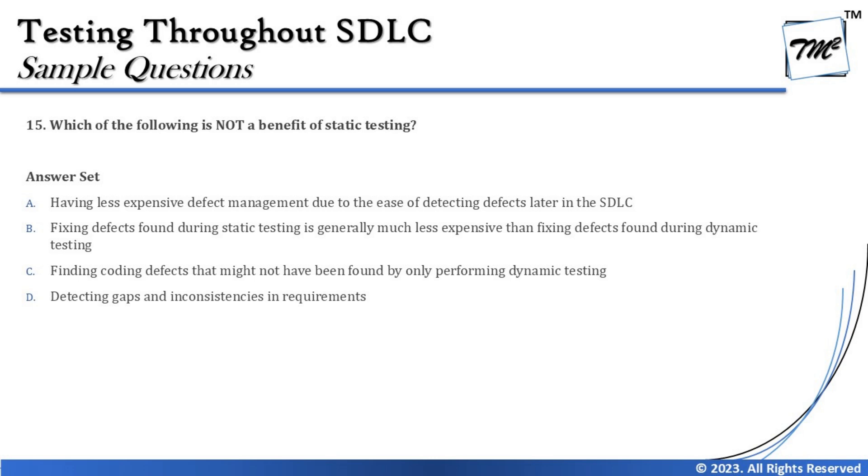Option B says: fixing defects found during static testing is generally much less expensive than fixing defects found during dynamic testing. Yes — the cost of fixing defects later in the life cycle is higher because in earlier phases we have limited work products and rework is minimized. When a defect is found during dynamic testing related to a misunderstanding of a requirement, rework is very high — we have to rectify the requirement, redesign, reimplement, and retest. So the cost of fixing defects is cheaper in static testing — that is a genuine benefit.